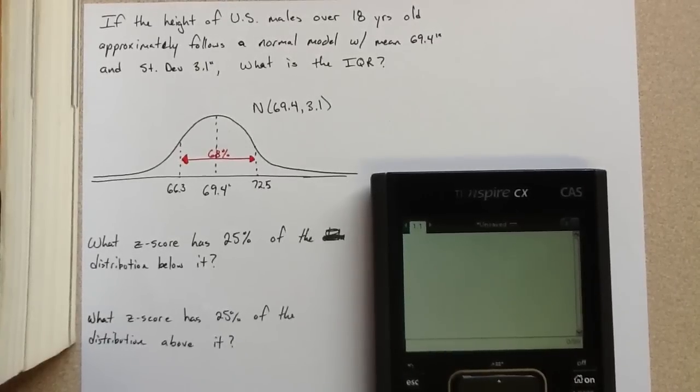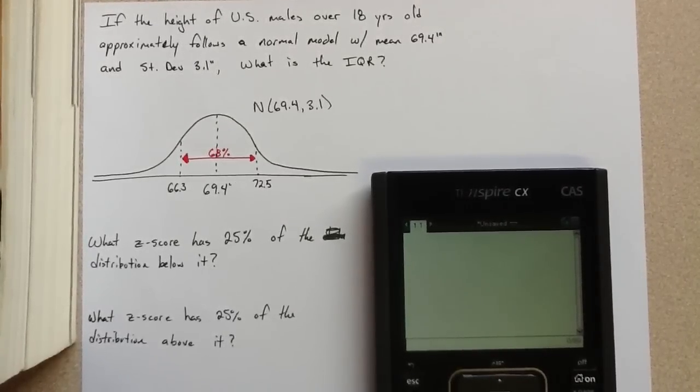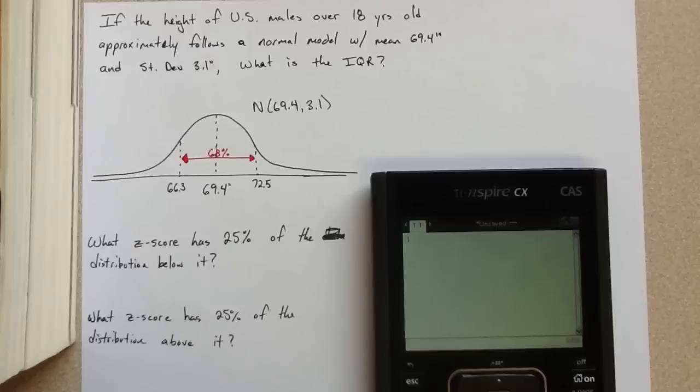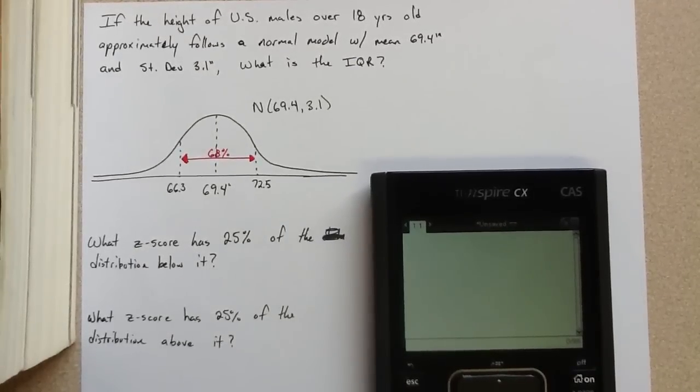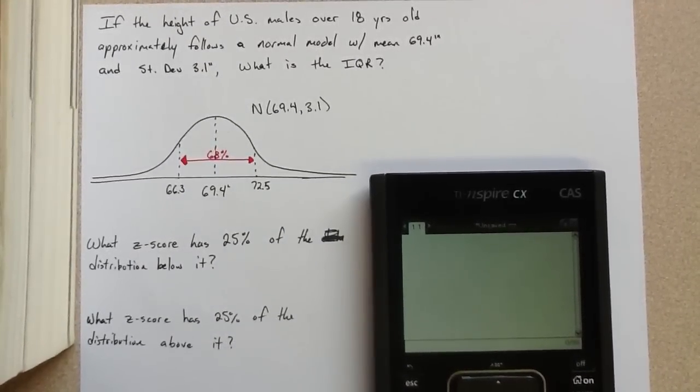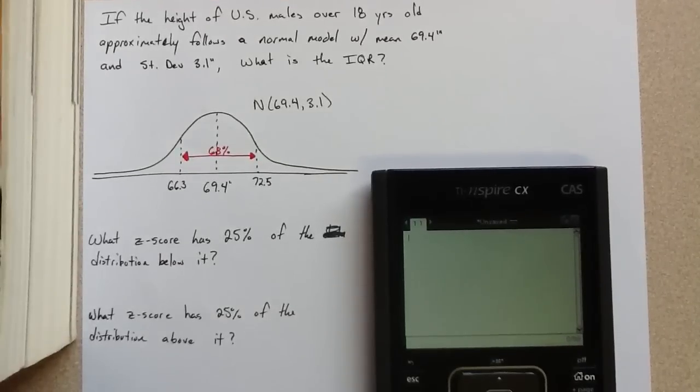So we're looking at the height of U.S. males 18 years and older. If that approximately follows a normal model with a mean of 69.4 inches and a standard deviation of 3.1 inches, what would be the IQR, or the interquartile range?